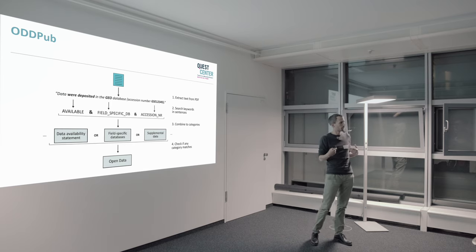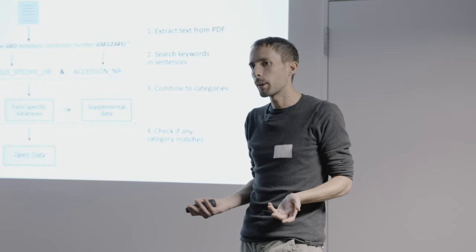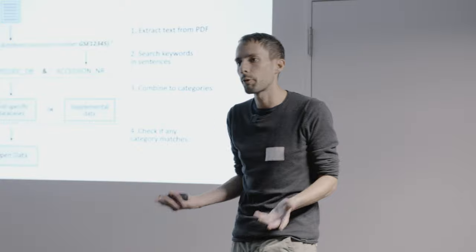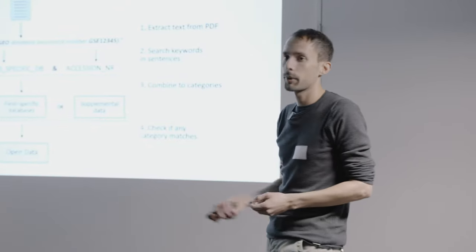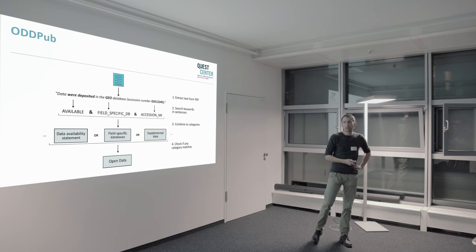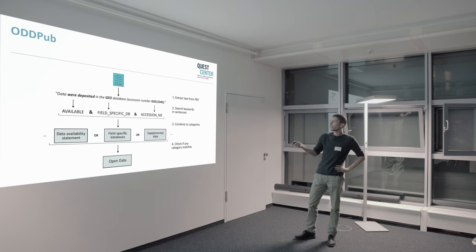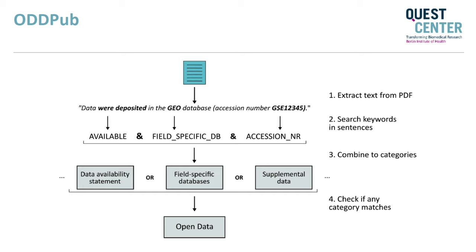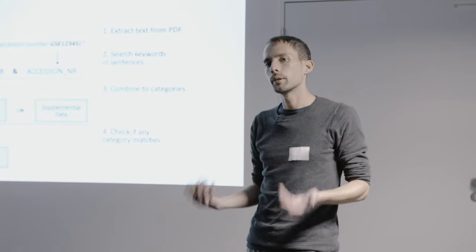We wanted to know at our institution, the Charité, how many publications have open data, but we can't read 4,000 publications per year. So we developed this text mining tool. It looks for certain combinations of keywords in sentences. For example, for a field-specific database like GEO, you need the database name, an accession number matched by regular expression, and some verbs indicating data was deposited. We also look for supplemental data, data availability statements, and more — and if any of these match, open data is detected.